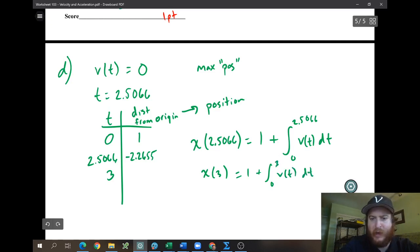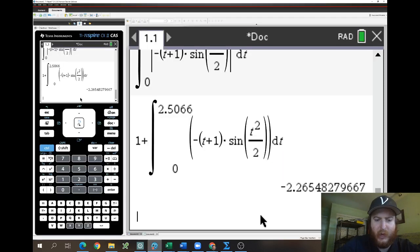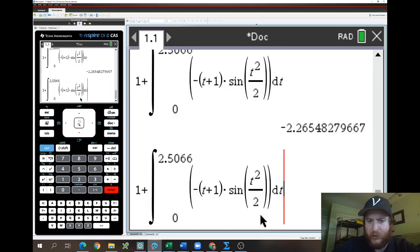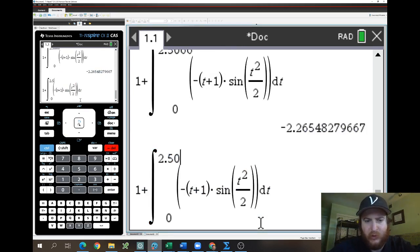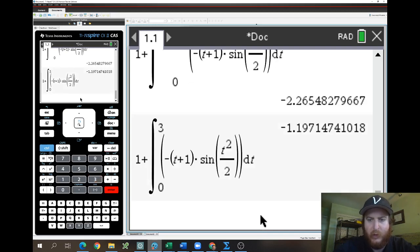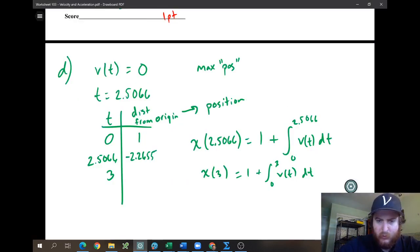Then we would do the same thing for X of 3. It would be one plus the integral from zero to three of V of T dt. It is important that you write these down, right? So that the grader knows how you're getting these answers. And so then we're going to just pop up here. We can just hit enter and just change our 2.5066 to a 3. Hit control enter. You get negative 1.197.